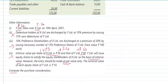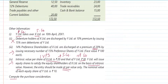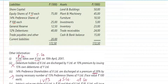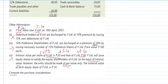For the preference shareholders, information 3 states that the 14% preference shareholders of X Limited are discharged at a premium of 20%. In other words, Y Limited is ready to pay them 20% extra over the balance sheet value of the preference shares. The sum total of what is paid to equity shareholders and preference shareholders is what becomes the purchase consideration.